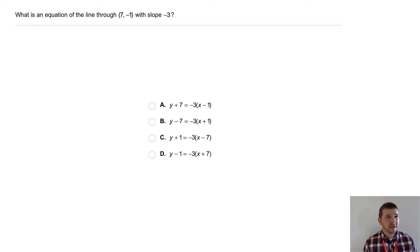Your turn. What is an equation of the line through the point (7, -1) with slope -3?